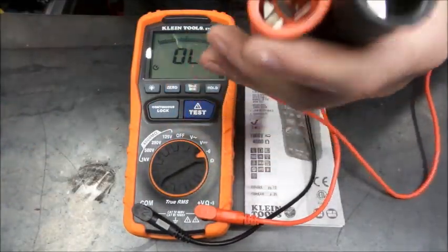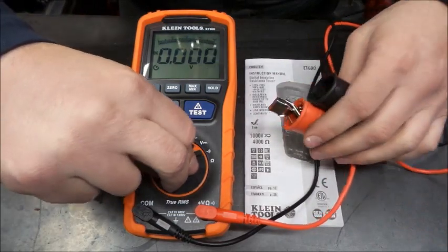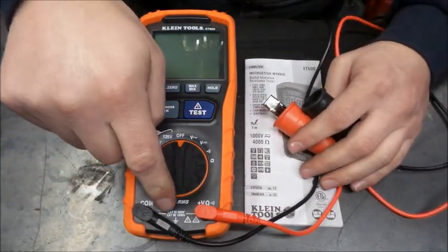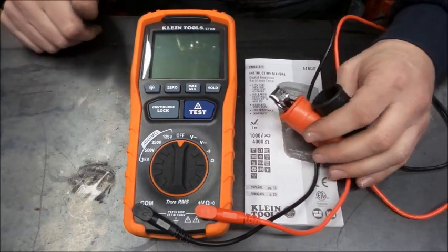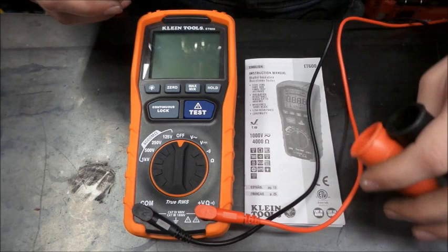We sit there and we have the resistance telling us that it's a closed circuit. We open it back up, there we go. So that worked great. I did not use the voltage test function, but it says it's a true RMS meter.